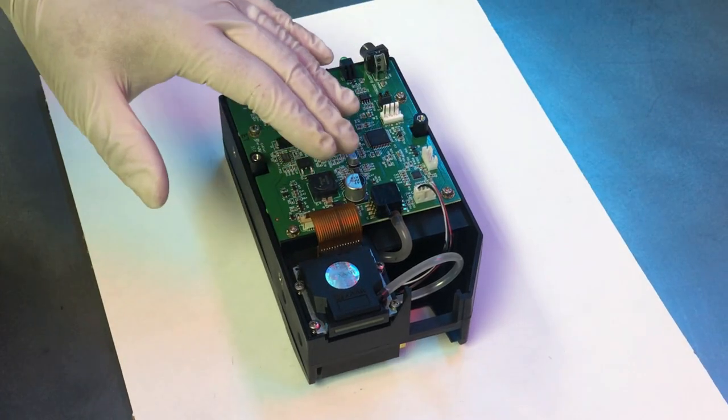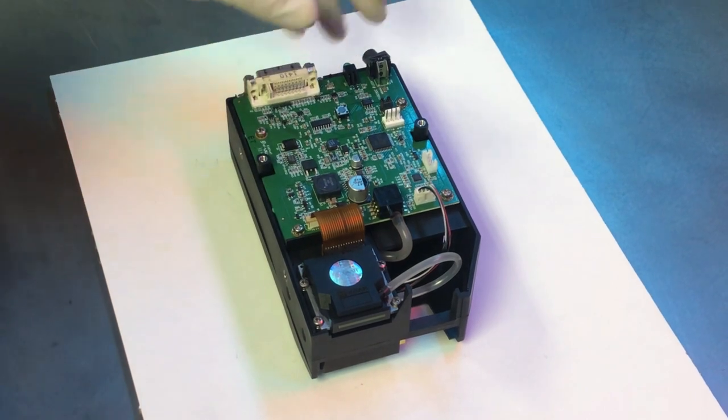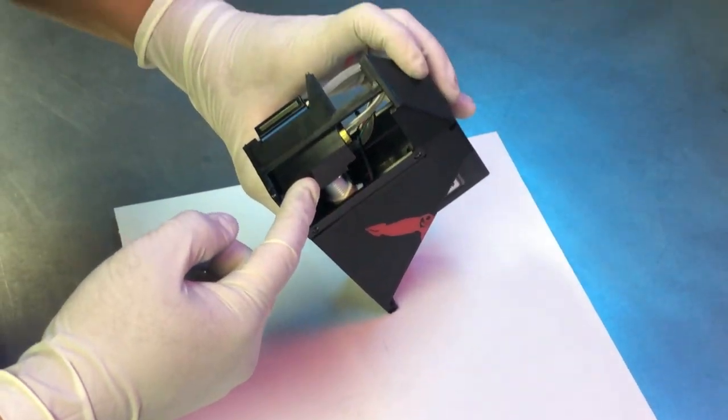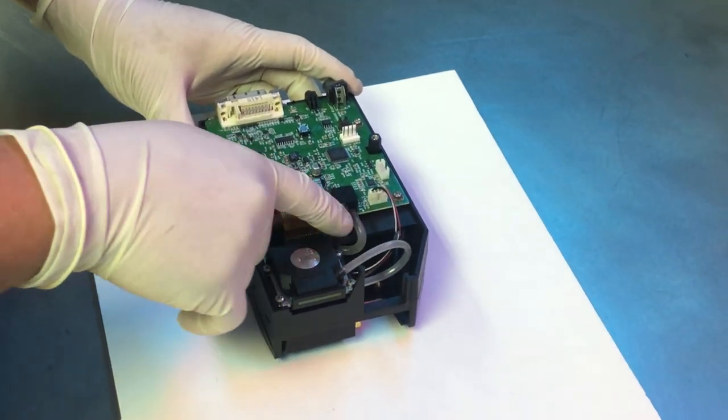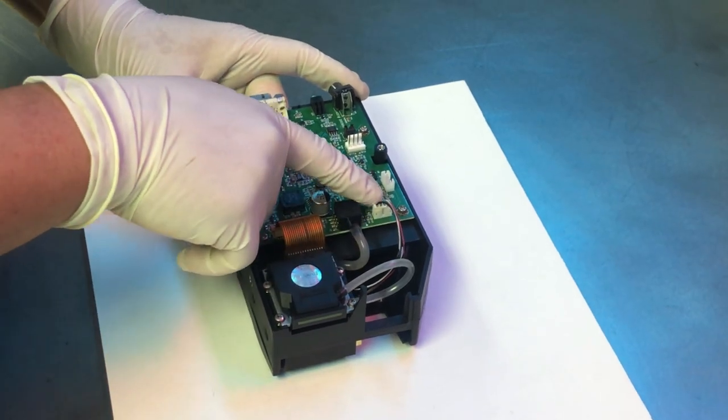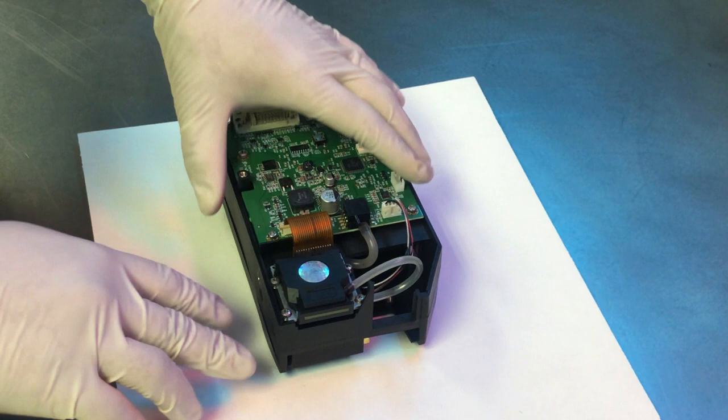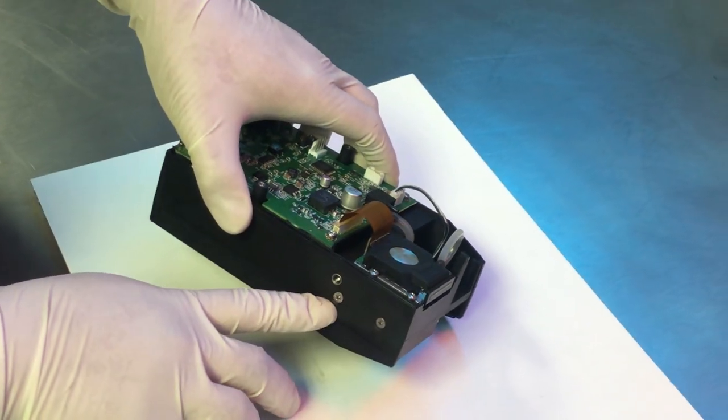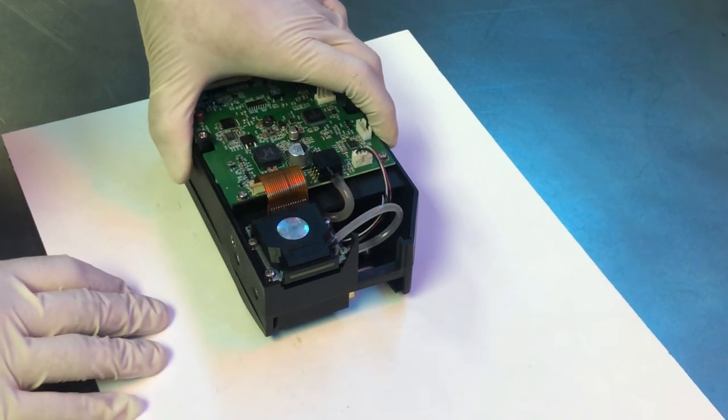We're now going to go ahead and perform an ink manifold replacement. The manifold that we'll be replacing is right here, and there's three things coming out of it. You see your ink line, vacuum line, and stepper motor connection. Before we undo the screws on the bottom holding the ink manifold in place, we're going to go ahead and disconnect each one of these.